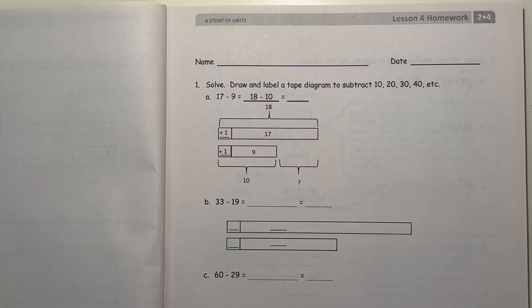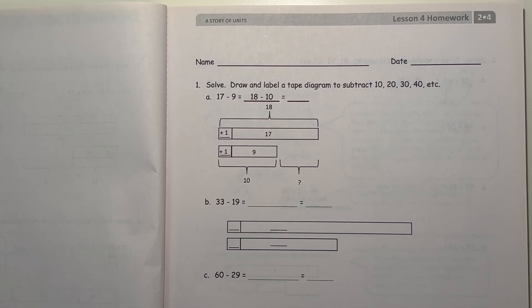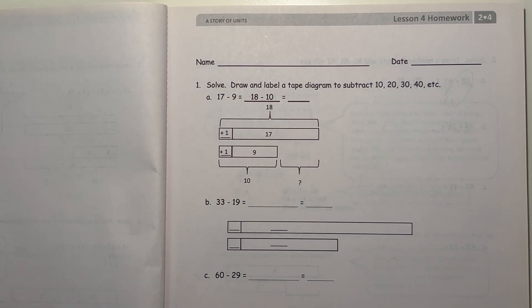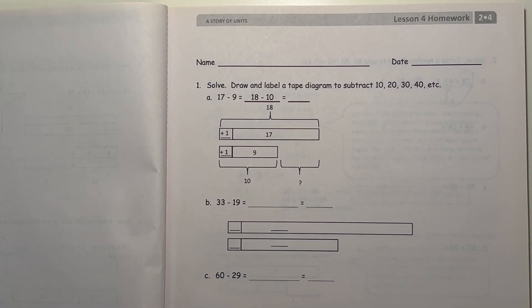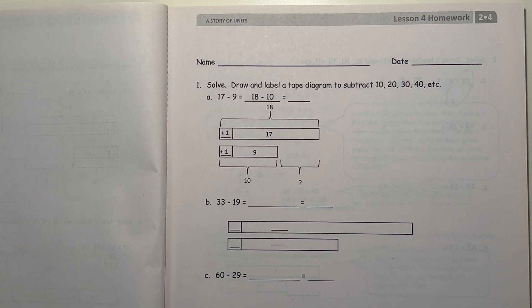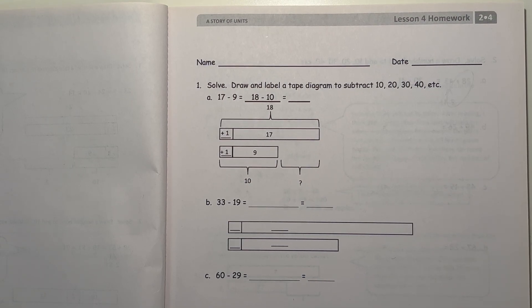Alright, number one, solve. Draw and label a tape diagram to subtract 10, 20, 30, 40, etc. Alright, so A, 17 minus 9. It's easier to subtract tens, so numbers that end with a 0, basically.